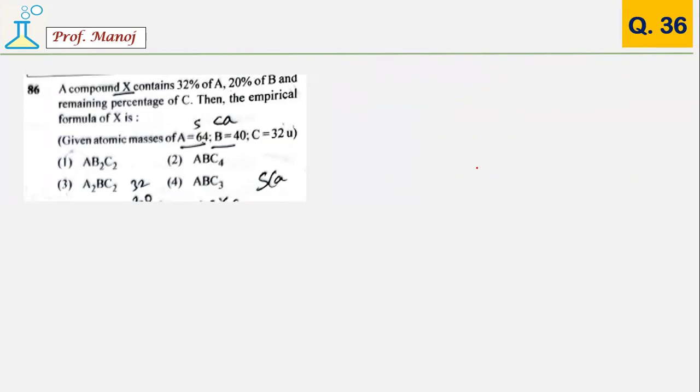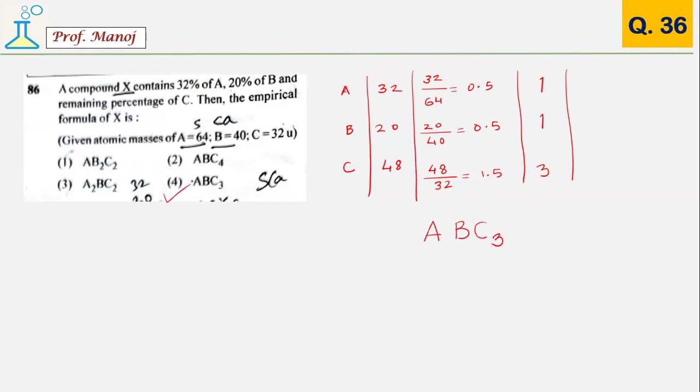Then comes an empirical formula problem. Let us solve and see. Three elements given with percentages 32, 20. Remaining percentage C comes out to be 48. When you divide by their atomic masses: 34 by 64 is 0.5, 20 upon 40 is 0.5, and 48 upon 32 comes out to be 1.5. When you divide by the smallest digit, the answer is 1, 1, 3. So it is A, B, and C3. The answer is 4.